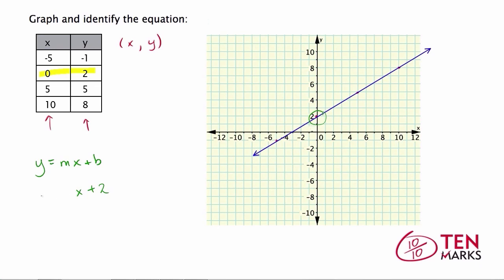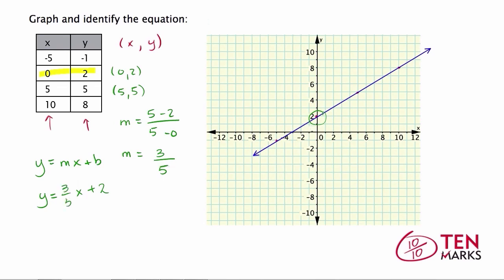Now we need to find the slope. You can use the slope formula with any two points. Using (0, 2) and (5, 5): m equals 5 minus 2 over 5 minus 0, which gives 3 over 5. So we have a slope of 3 fifths. That means the equation for the line given in the graph and from the table is y equals three-fifths x plus 2.